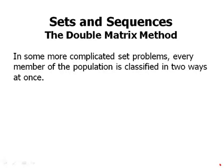The double matrix method. In some more complicated set problems, every member of the population is classified in two ways at once.